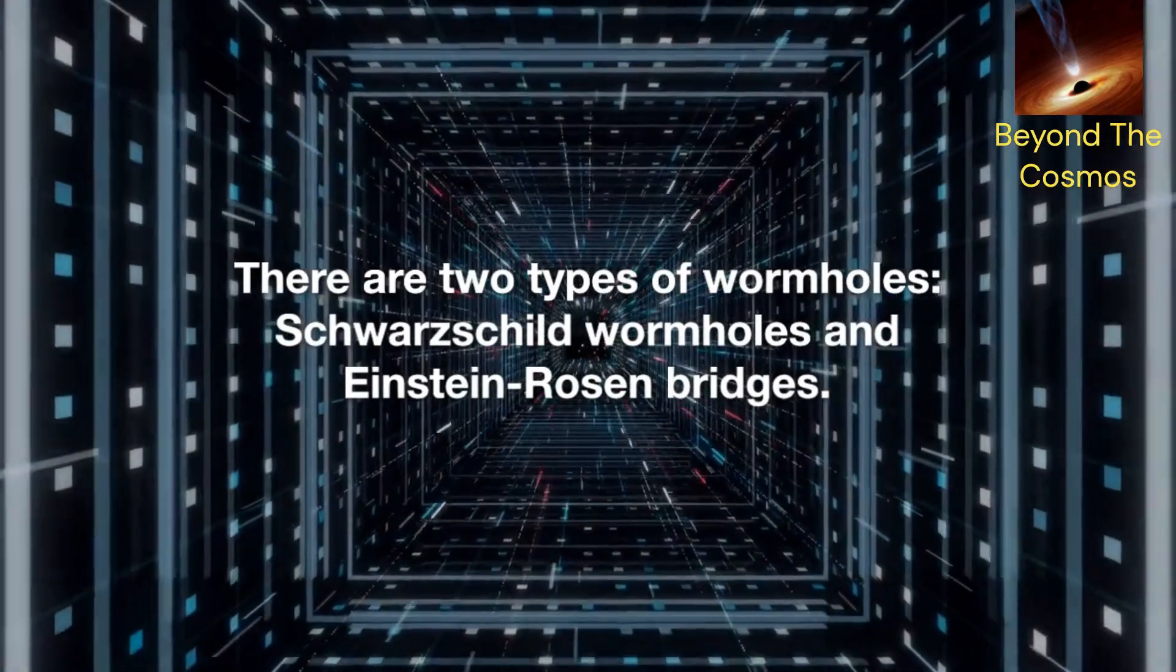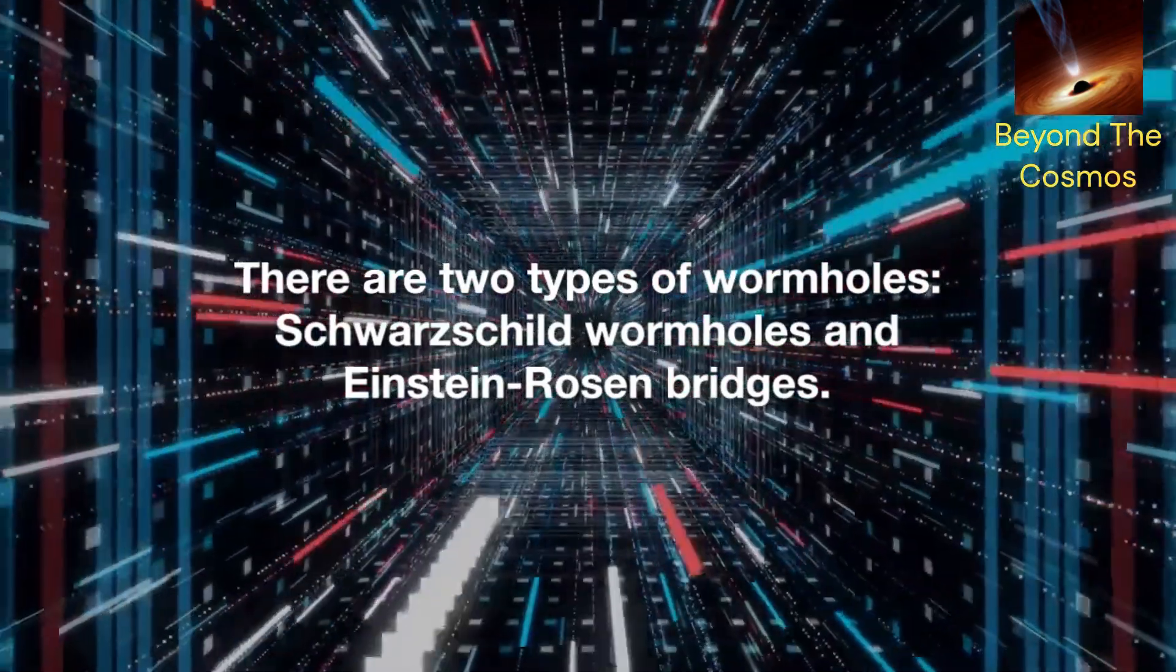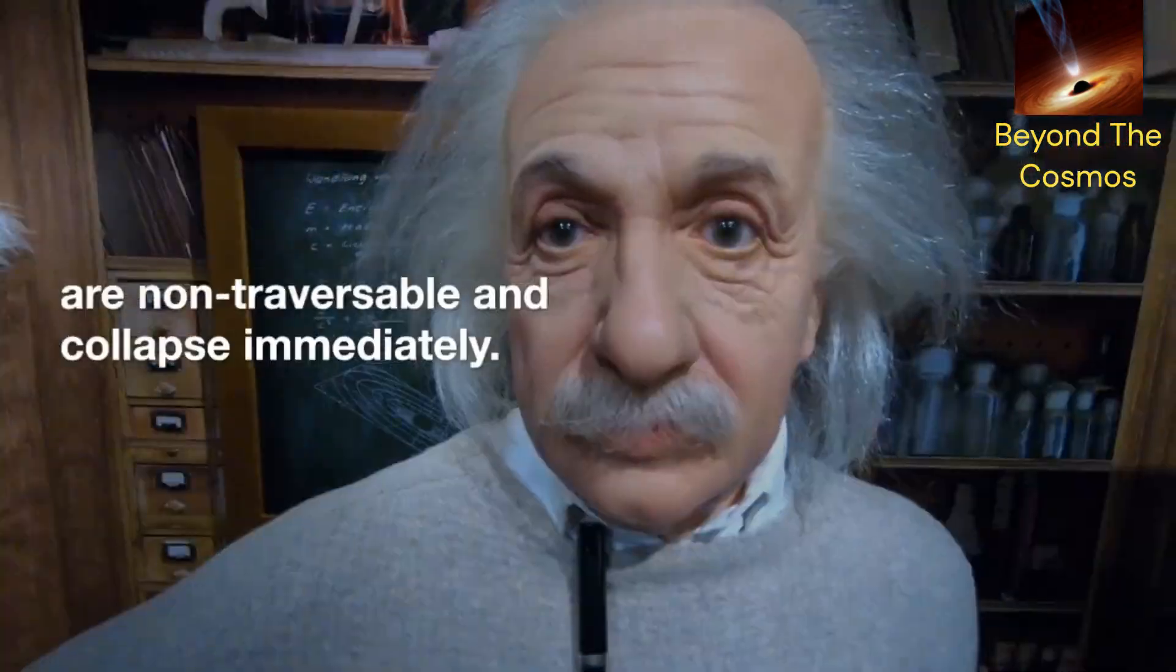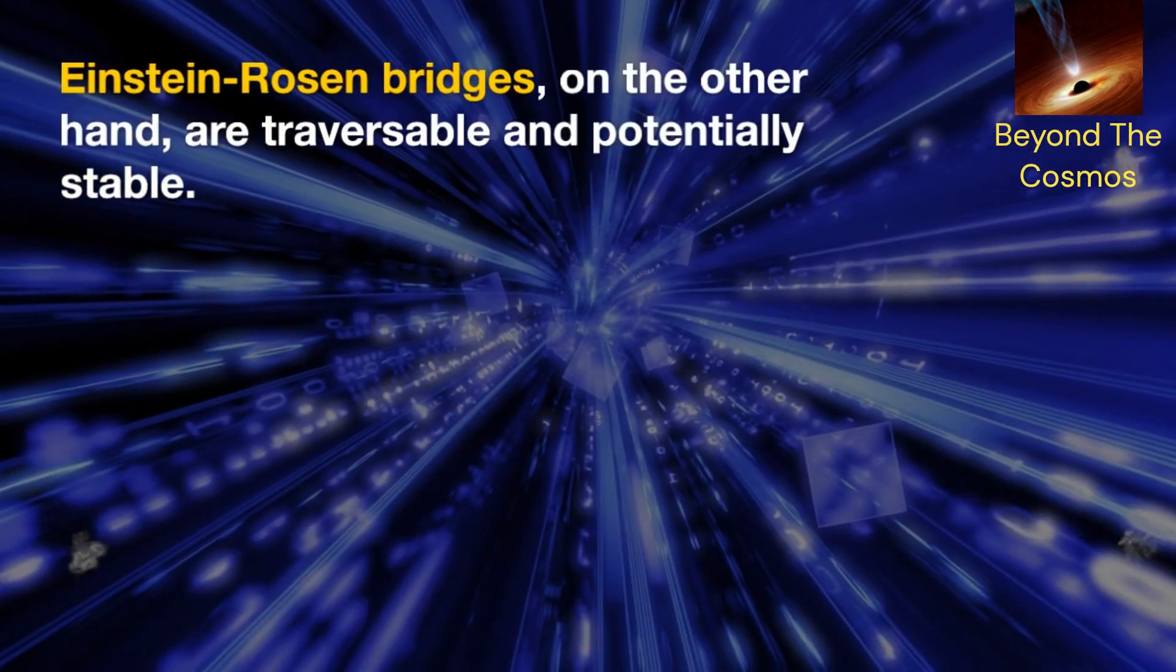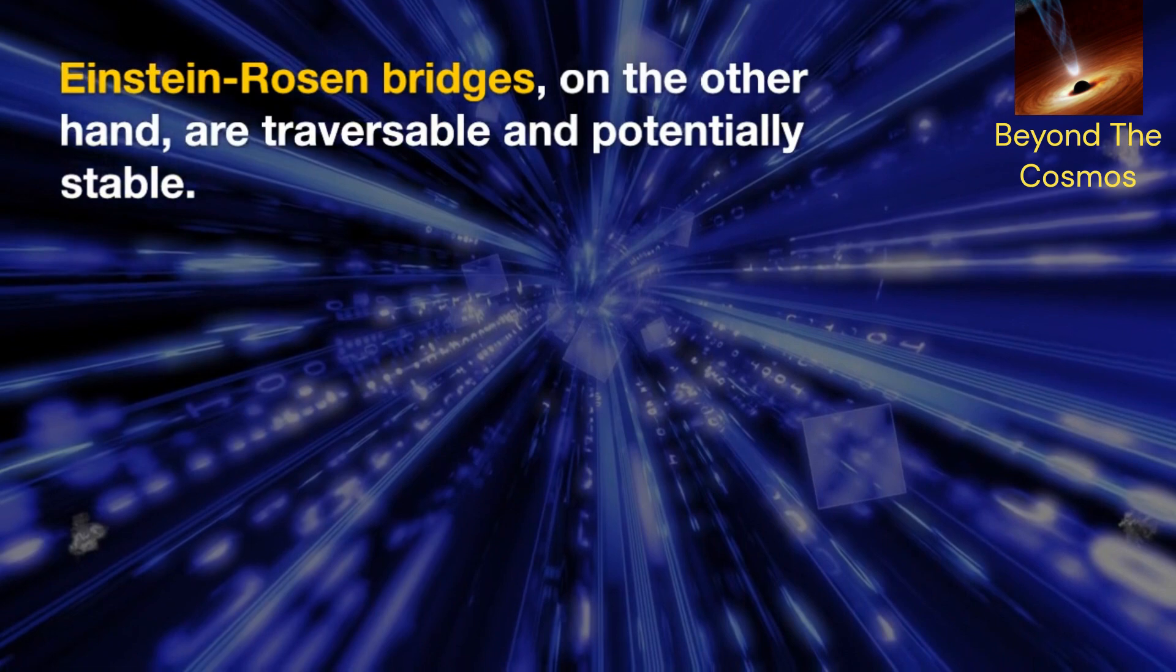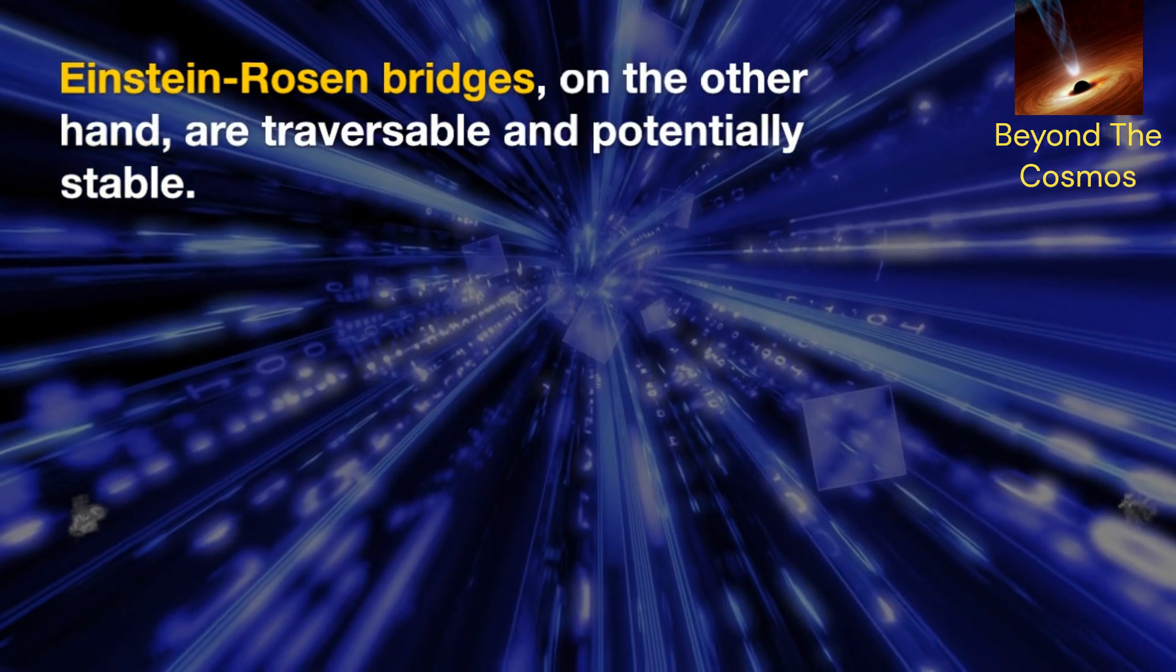There are two types of wormholes: Schwarzschild wormholes and Einstein-Rosen bridges. Schwarzschild wormholes are non-traversable and collapse immediately. Einstein-Rosen bridges, on the other hand, are traversable and potentially stable.